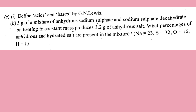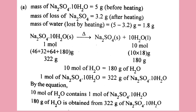5 grams of a mixture of anhydrous sodium sulfate and sodium sulfate hydrate, on heating to constant mass, produces 3.2 grams of anhydrous salt. Calculate the percentage of anhydrous and hydrated salt present in the mixture. 8% of anhydrous and hydrated salt are present in the mixture.